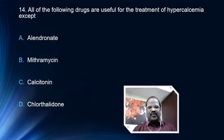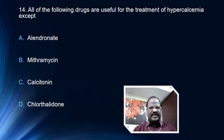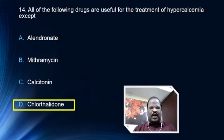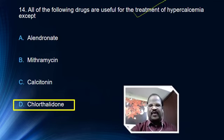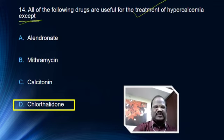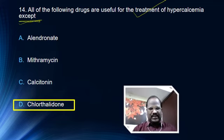Question number 14: all of the following drugs are useful for treatment of hypercalcemia except. Options are alendronate, mithramycin, calcitonin, and chlorthalidone. The right answer is option D, chlorthalidone. Chlorthalidone is a thiazide group diuretic. Thiazide in general causes calcium reabsorption resulting in hypercalcemia — so it would worsen, not treat, hypercalcemia.